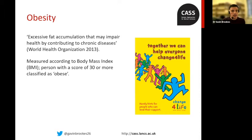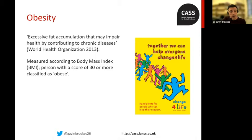Diagnosing obesity isn't straightforward. In the UK, the most widely used method is Body Mass Index, or BMI — a measure that correlates a person's weight with their height and provides a score indicating healthy weight. The system has received much criticism; for example, it doesn't handle muscular people well, as they may weigh a lot for their height without having much body fat, giving them a high BMI score despite being healthy.